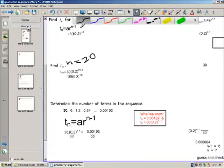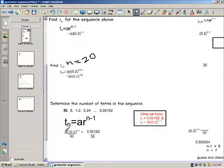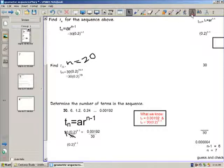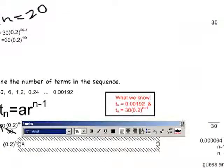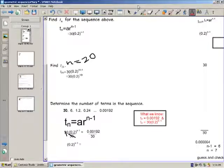So, having done that, we will get this 30, this 30 cancelling. And we will end up with just the 0.2 to the n minus 1 on the left side of the equals. And on the right side of the equals, we will have the value when these two are divided. When I divide these two, my answer is 0.0000064.